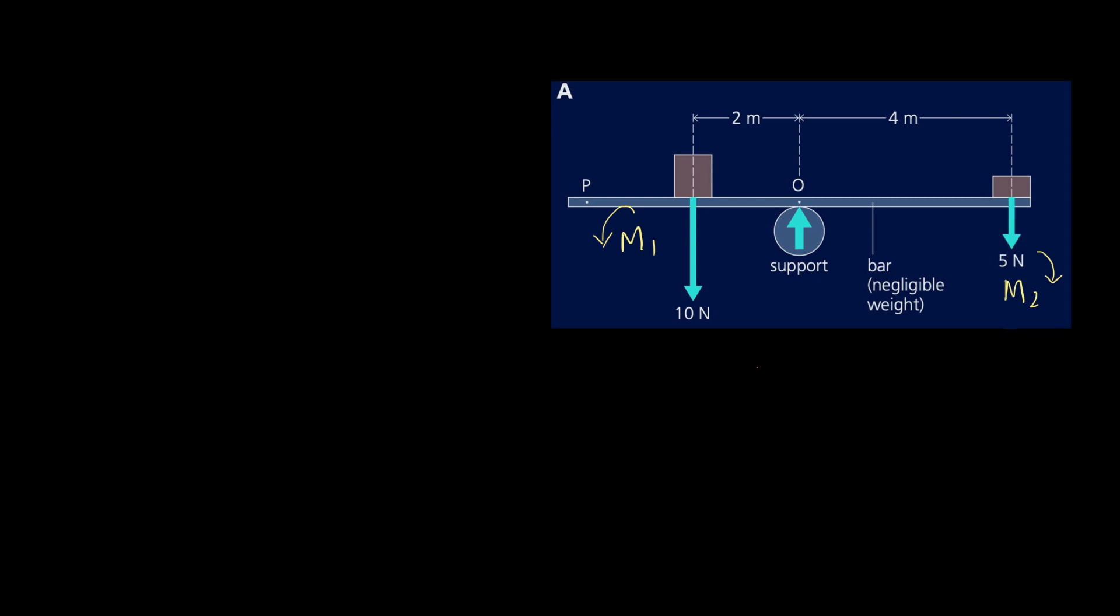So what's the sum of these moments? The net moment or the total moment M_NET is equal to moment 1... Let's take clockwise as positive. So this should be equal to minus moment 1 because moment 1 is counterclockwise, so we're gonna put a minus sign. But moment 2 is in the same direction, so that's gonna be positive moment 2.